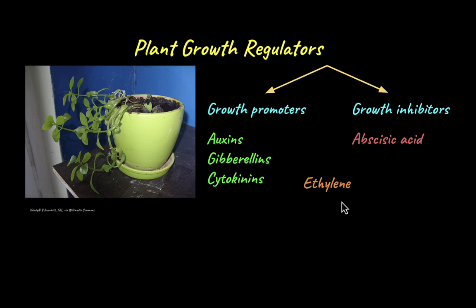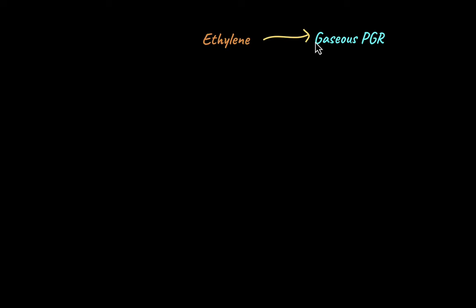First let's start with ethylene. Ethylene is a simple gaseous PGR. Its chemical formula is CH₂=CH₂.